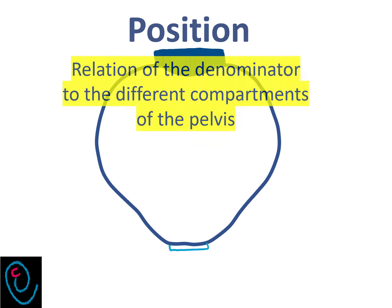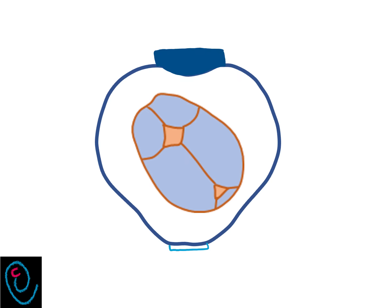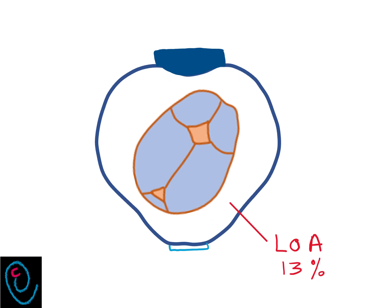Let's take vertex presentation with its denominator, the occiput, as an example. Here you see the occiput directed anteriorly and to the left, and that's why it's called left occipital anterior position. On the other side, it becomes right occipital anterior.